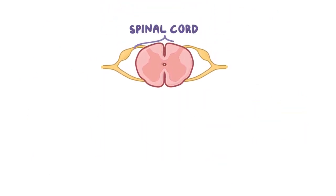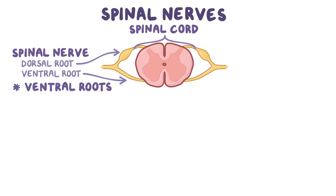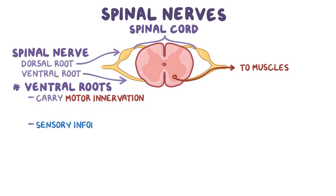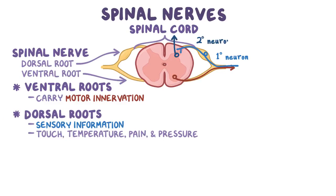The peripheral nerves originating from the spinal cord are called spinal nerves. Each nerve is formed by a dorsal and a ventral root. Ventral roots contain neurons that carry motor innervation from the spinal cord to the muscles. Sensory information — like touch, temperature, pain, and pressure from the skin and other tissues — travels through first-order sensory neurons in the dorsal root ganglion near the spinal cord, then through the dorsal root and into the spinal cord, where it synapses with second-order neurons.